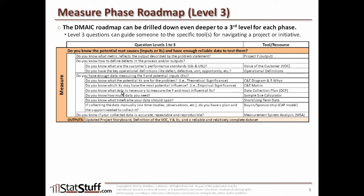Once we've got that, we move on to the next question: do you know what data is necessary to measure the Y and the most influential x's? If not, we'd explore using the data collection plan, or DCP. Next: do you know how much data you're going to need, especially if you're only going to be sampling? A sample size calculator can help answer that. Next: do you know what time frame your data should span? We need a clear understanding of what short and long-term data is and how it's represented in our data to make sure we're covering the right level of time.